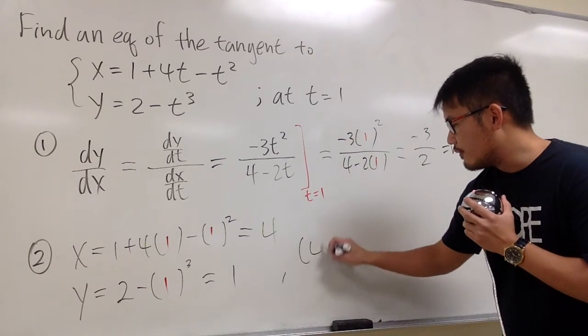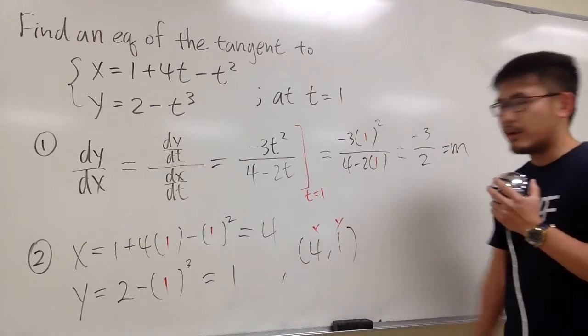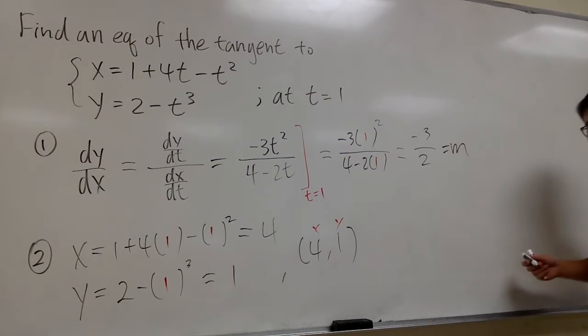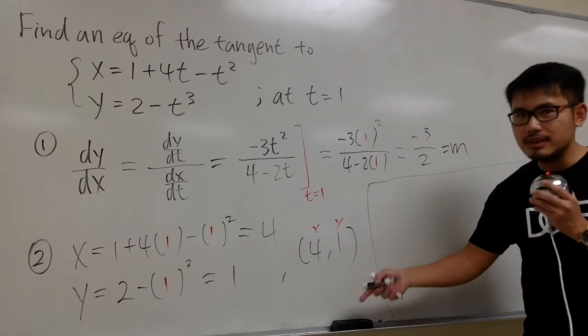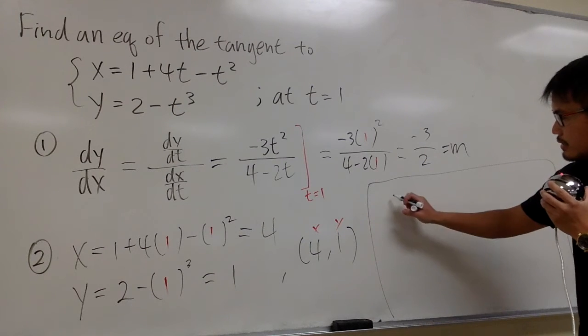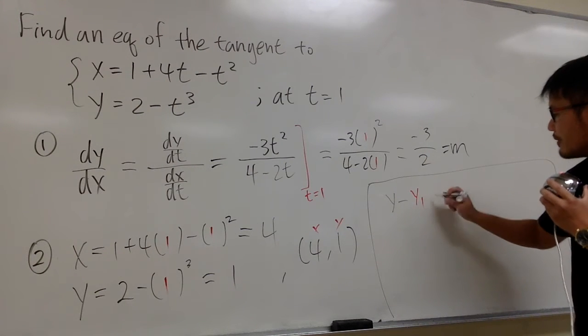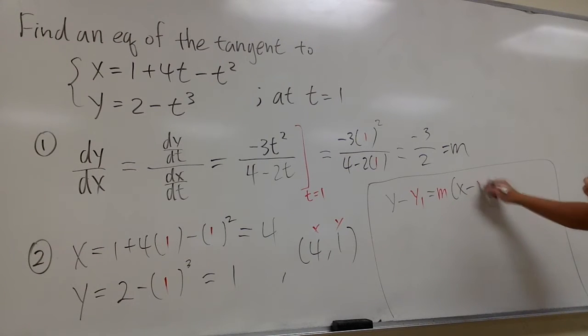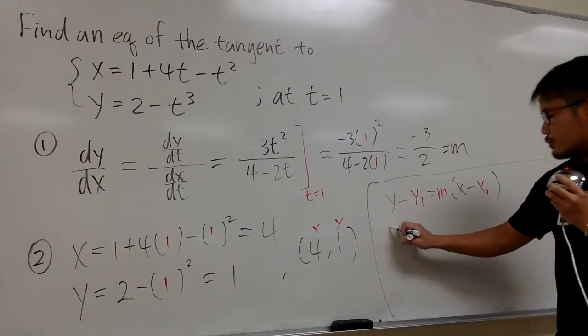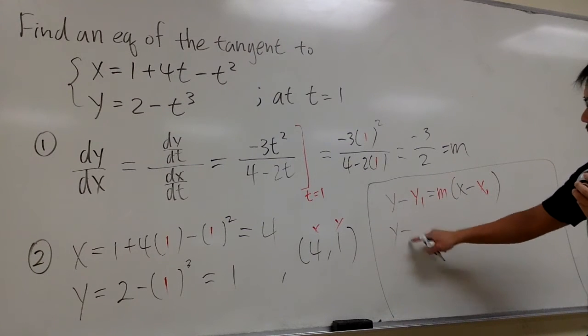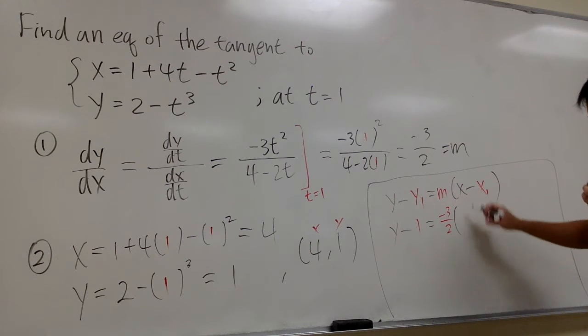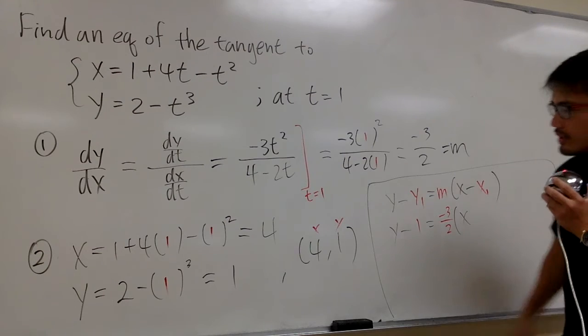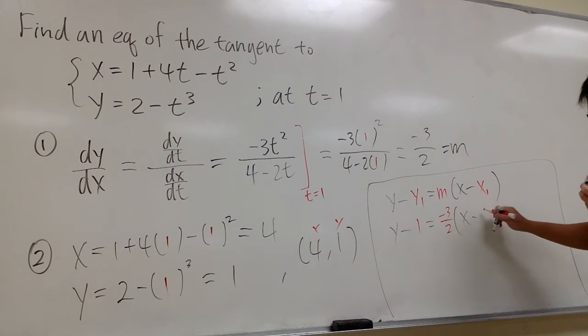So the point that we have is 4 comma 1. This is x value, and that's the y value. Where we have the slope, we have the point to get the equation of the line. Let's just use y minus y1 equals m times x minus x1. And let's just do the usual algebra. y minus 1 equals m, which is negative 3 over 2, and then this is just the regular x. x1 is 4 minus 4, like this.